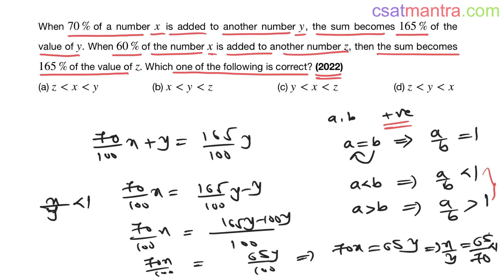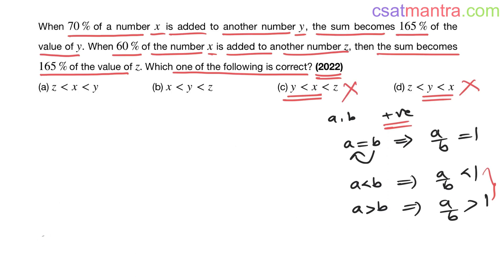Since x/y = 65/70, which is less than 1, x is less than y. Options where x is greater than y are eliminated. From the first statement, we conclude x is less than y.